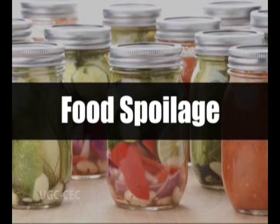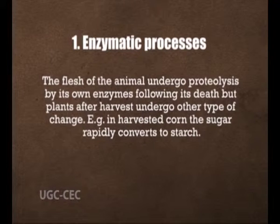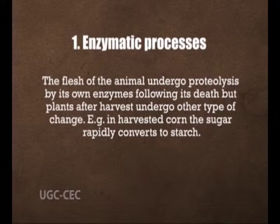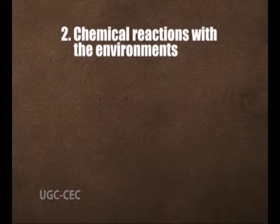In food, several kinds of chemical changes occur once the food is harvested. Some changes may be considered desirable, such as meat tenderizing, whereas others are undesirable. The major classes include: first, enzymatic processes, where the flesh of an animal undergoes proteolysis by its own enzymes following death, while plants after harvest undergo other types of change — for example, in harvested corn, the sugar rapidly converts to starch.